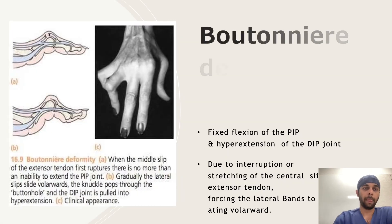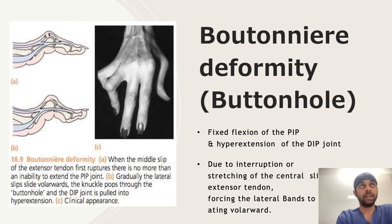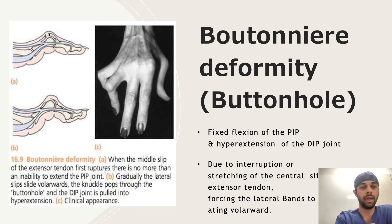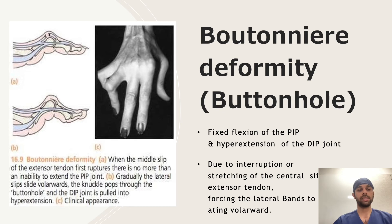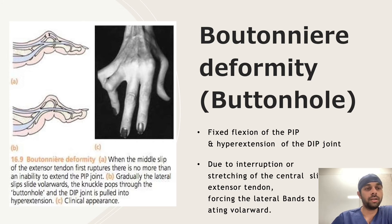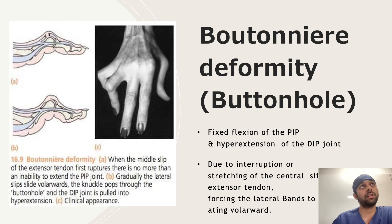Now the second deformity — the boutonnière deformity or buttonhole deformity. When the middle slip of the extensor tendon ruptures, there is an inability to extend the PIP joint. Gradually the lateral slips slide volarly, the knuckle pops out through the buttonhole, and the DIP joint is pulled into hyperextension. The lateral bands slide down volarly, and because of the tension of these lateral bands, the distal joint goes into hyperextension while the proximal PIP joint goes into flexion — and they remain like that.